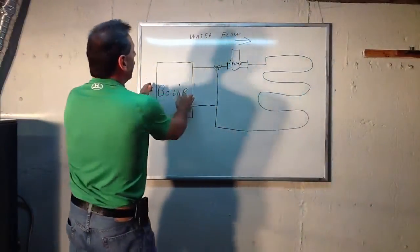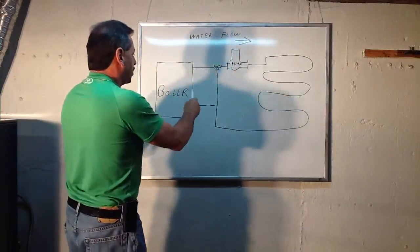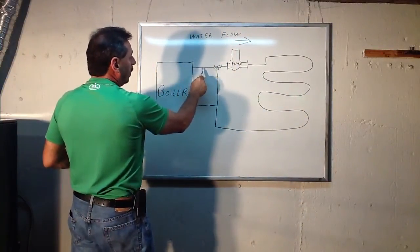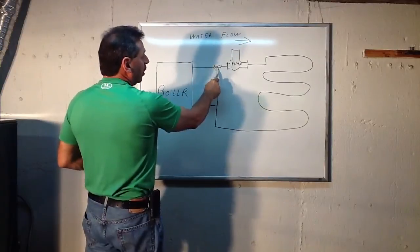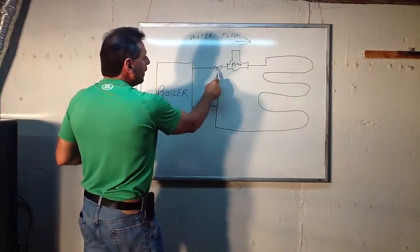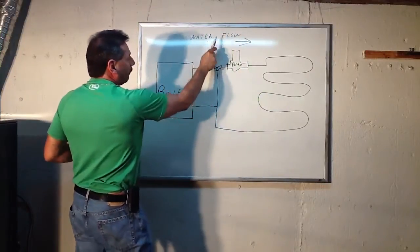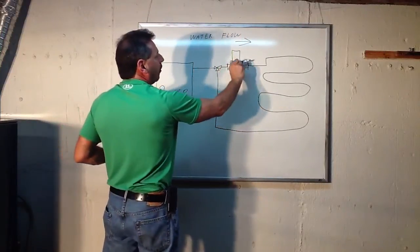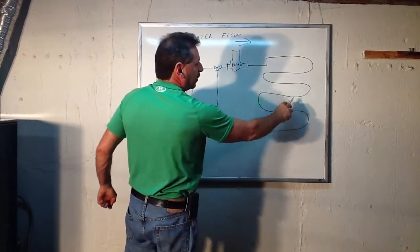The boiler is set up and running at 180 degrees. You immediately come out of the top of your boiler. The first thing you install is a mixing valve. Right after the mixing valve is going to be your circulator pump. Remember the water flow is away from the boiler going into the radiant tubing under the floor.